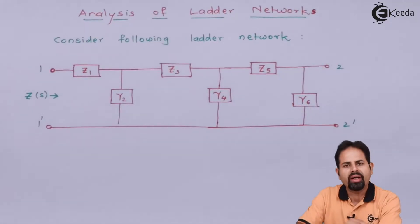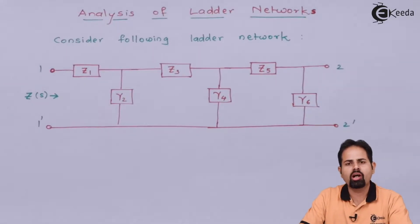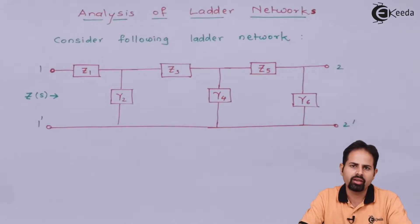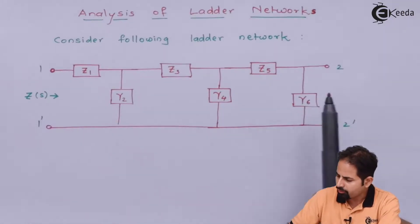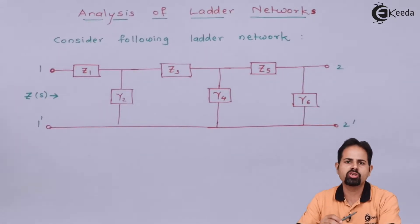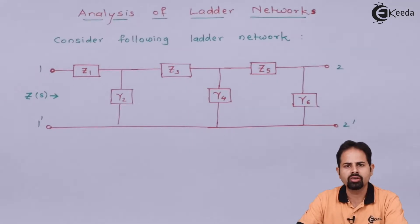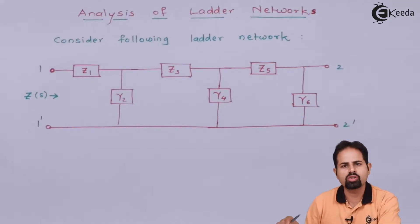So let us see how to find it by using ladder network. Ladder means we all know how we climb up by using ladder, we use step by step. So for this network also, step by step, starting from right to left, we will solve it and we will get the total impedance function. Not only impedance but also voltage transfer function or current transfer function can be calculated by using ladder network. But only condition is the circuit should be in this form. So let us see how to solve it.